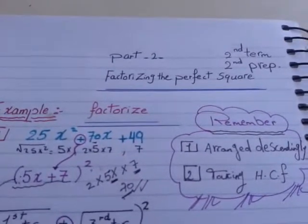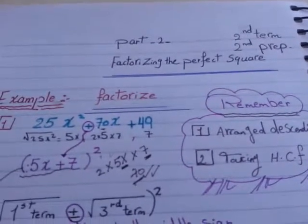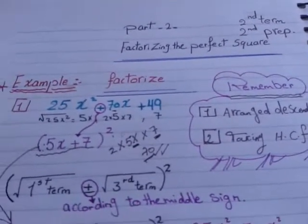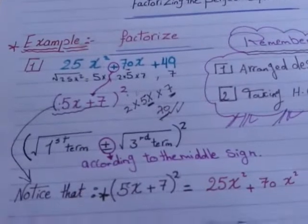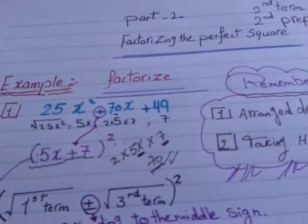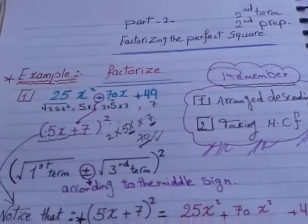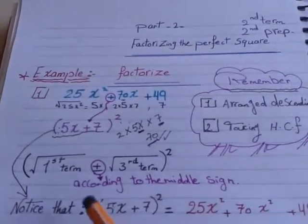Welcome back my dear students. In part 2 of our lesson factorizing the perfect square trinomial, first the example here is factorized as usual. Example 1: 25x² + 70x + 49. In part 1, that was a missing term.